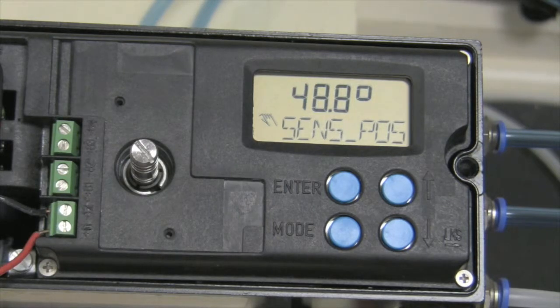Remember when we are calibrating the unit, we need to make sure that the sense position is between positive 57 and negative 57. We can see that this one is at positive 48.8.